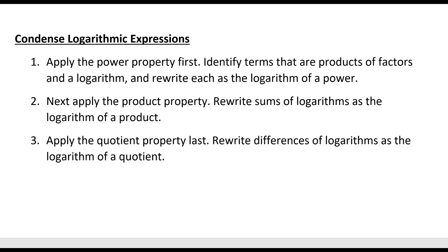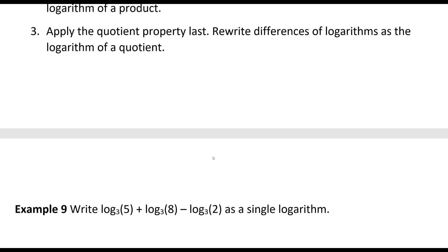Now we'll look at condensing logarithmic expressions. We apply the power property first — identify terms that are products of factors and logarithms, then rewrite each as a logarithm of a power. Next, apply the product property by rewriting sums of logarithms as the logarithm of a product. Finally, apply the quotient property last by rewriting differences of logarithms as a logarithm of a quotient.